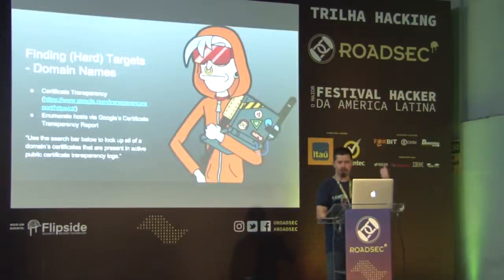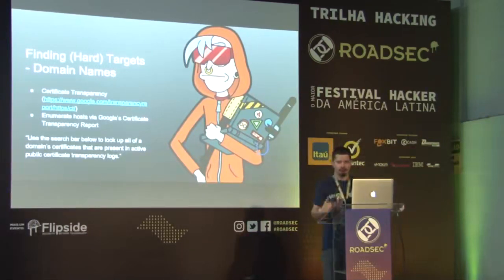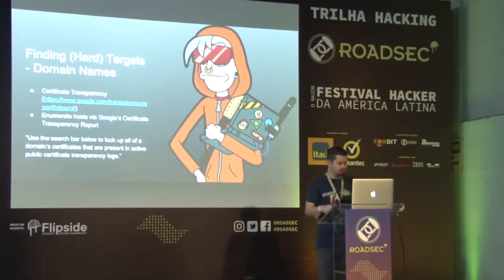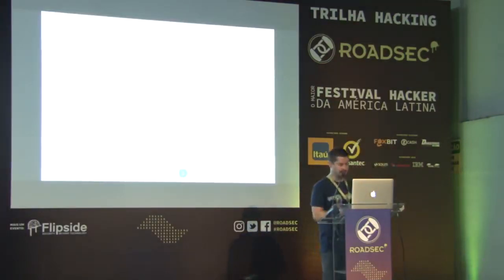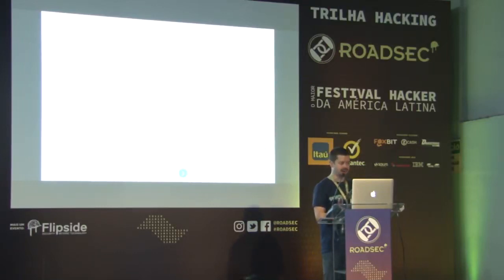Google Certificate Transparency Report is another free data source. Google basically archives a bunch of certificate data and then you can just search it. These are certs that are used by NASA, and again we're getting more hostnames — add.nasa.gov, cce.nasa.gov.